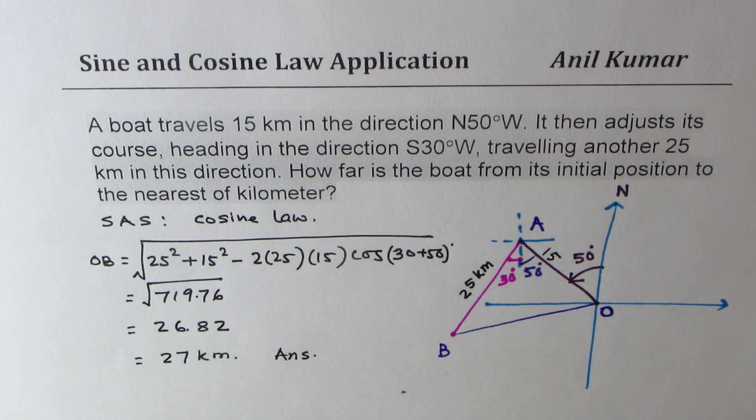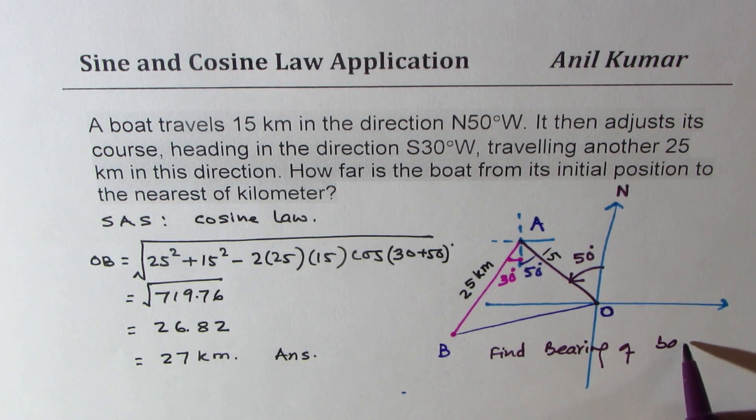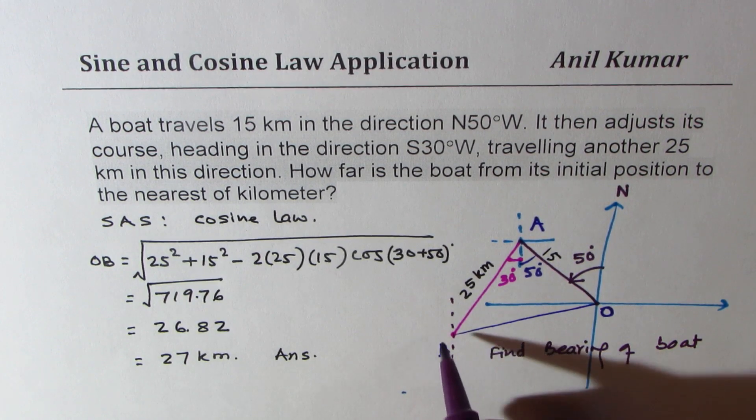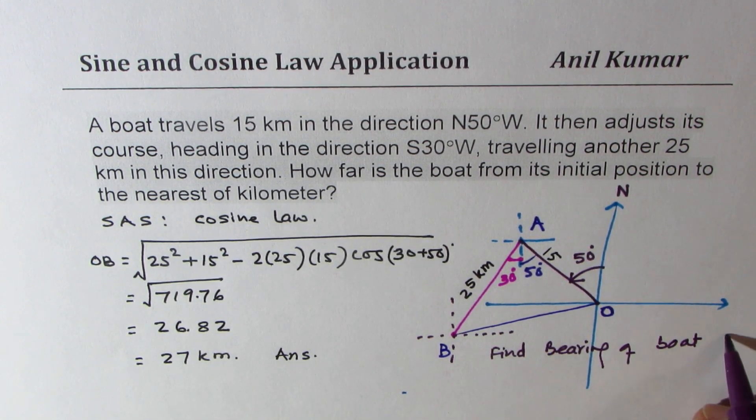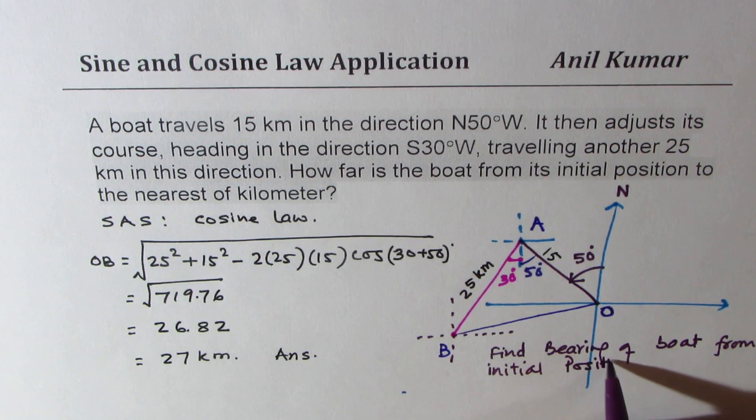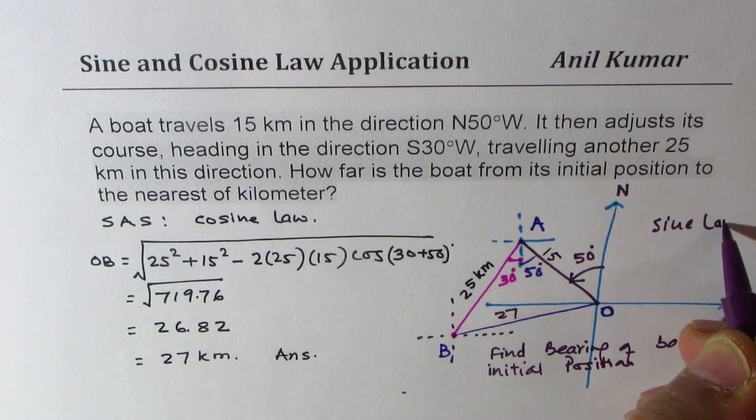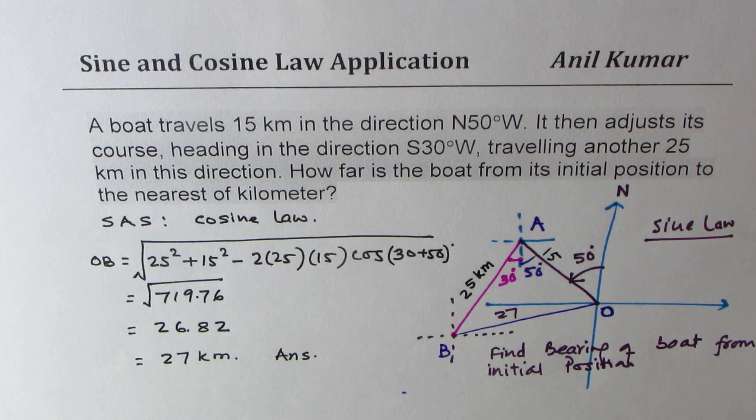Now we could add a part to this which you could solve, and that is find bearing of boat from initial position. Since you know this side is 27, you could use sine law to find the bearing. So let it be a practice question for you. It's important to find bearing also because many times in test paper that will be part of your question. Hope that is clear. Feel free to write your comments and share your views. If you like and subscribe to my videos that'd be great. Thanks for watching and all the best.